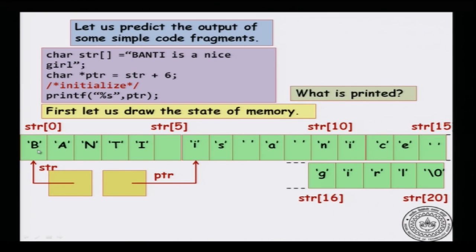You have an array which is a character array. It starts from str[0] and goes up to str[20]. There are 19 characters followed by the null character. The null character is there because I initialized it to a string constant — every string constant has a null character implicitly at the end.